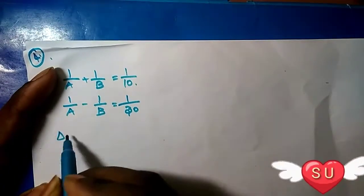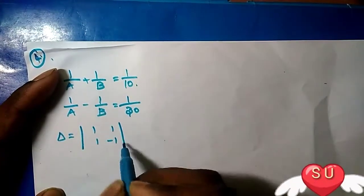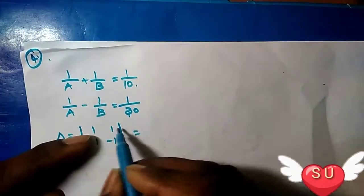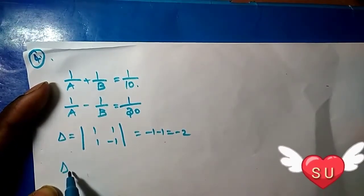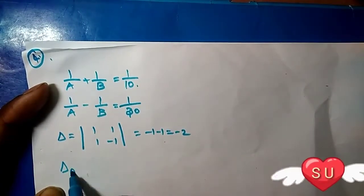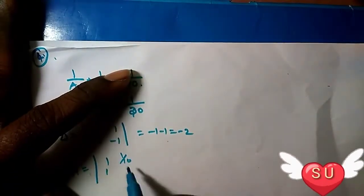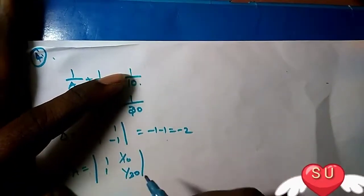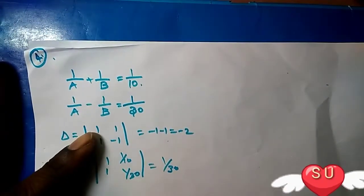This is Cramer's rule. Del is the determinant: 1, 1; 1, -1, which equals -1 - 1 = -2. Del A is 1/10, 1/30; 1, -1. Calculating, we get 1/30.